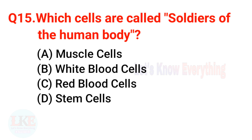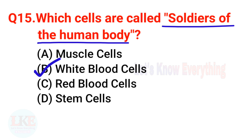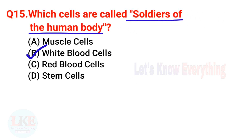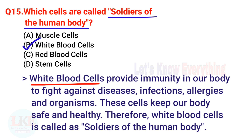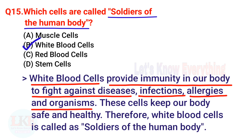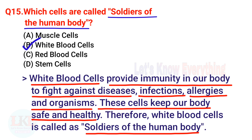Question 15: Which cells are called the soldiers of the human body? The right answer is option B — white blood cells. White blood cells provide immunity in our body to fight against diseases, infections, allergies, and organisms. These cells keep our body safe and healthy, which is why they are called soldiers of the human body.